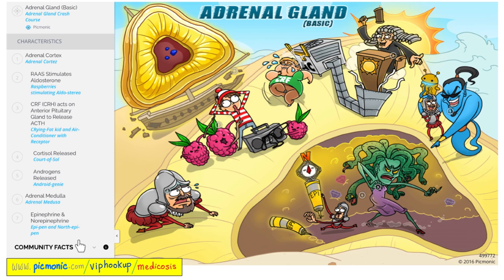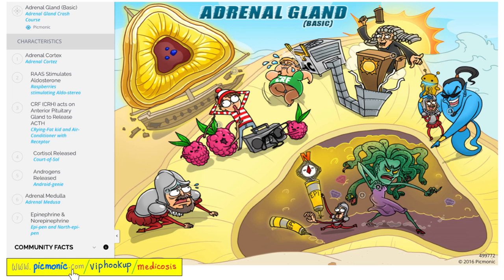Let's review the adrenal gland using Pygmonic. Here is the lovely adrenal gland — on the outside is the cortex, the yellow part, and deep inside is the medulla, the dark red part. The cortex is depicted by Cortez the conquistador. The cortex secretes aldosterone, cortisol, and adrenal androgens. The adrenal medulla — depicted as Medusa — secretes epinephrine, norepinephrine, and dopamine. For more mnemonics like these, go to pygmonic.com/viphookup/medicosis.